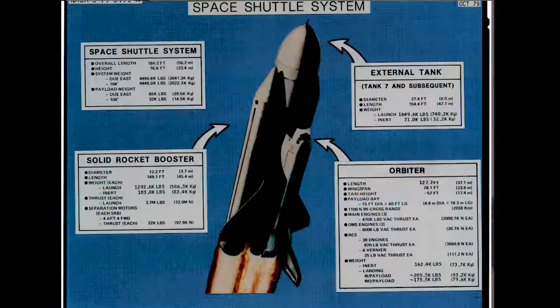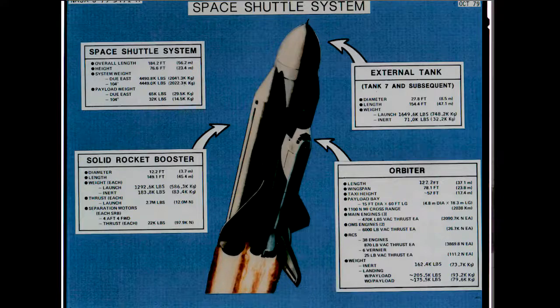That is a very oversimplified way of describing it, but that's basically how you use systems engineering to arrive at a configuration. These are some of the dimensions that come out of the vehicle — all the dimensions of the space shuttle system: the solid rocket boosters, the external tank, and the orbiter.